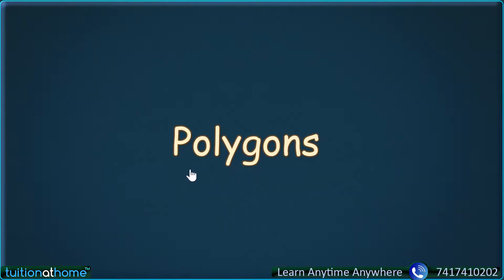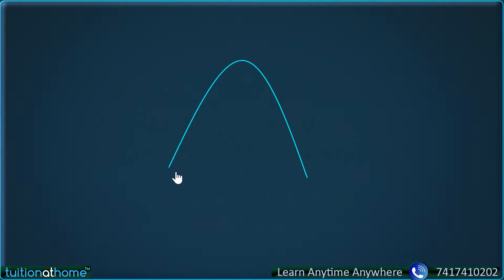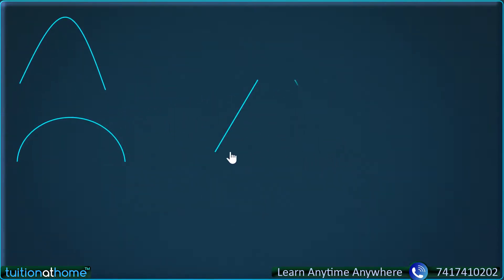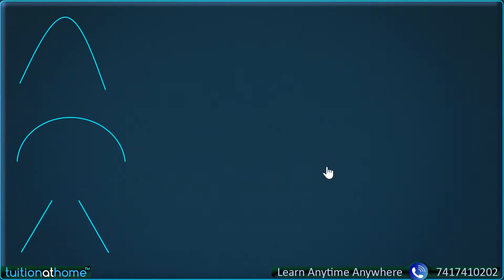When we were small, we used to draw many things and it was great fun. This was drawn to make hills, and this was drawn specially to make umbrellas. Sometimes we even used to draw figures like this, and sometimes even something like this.